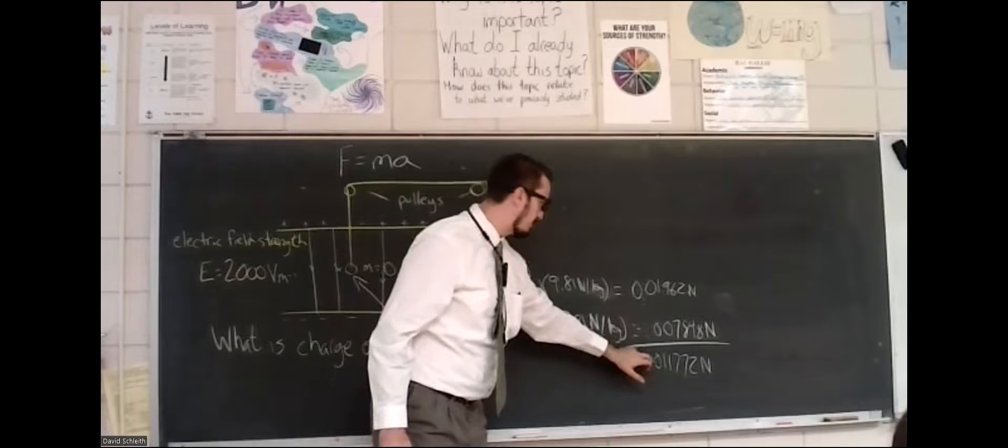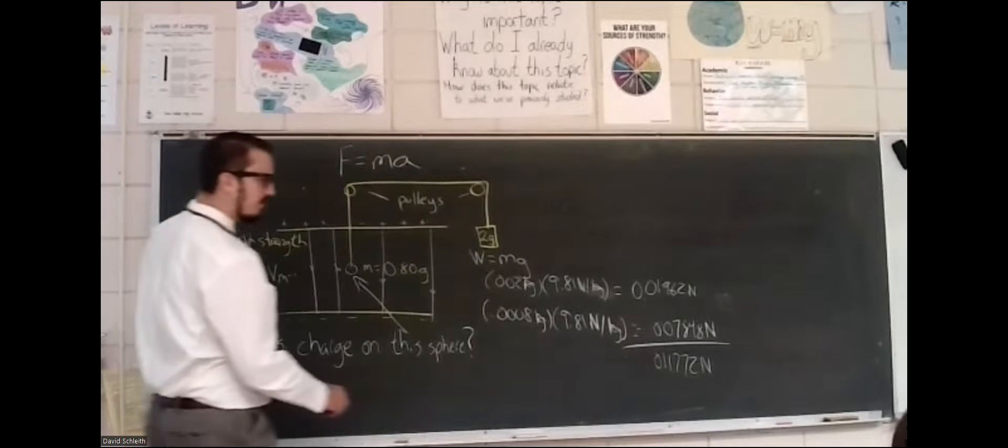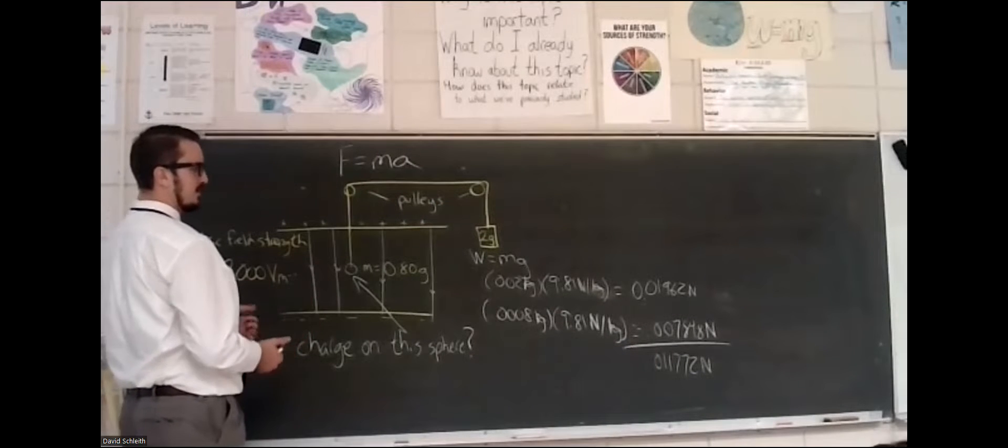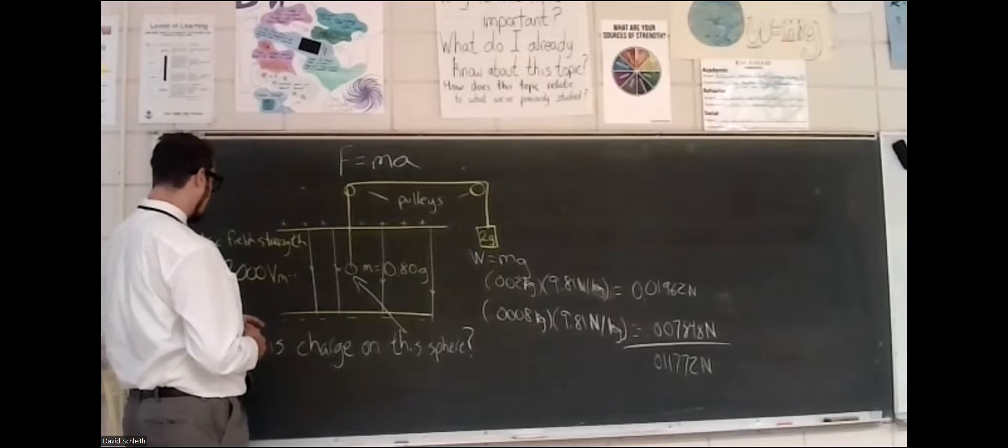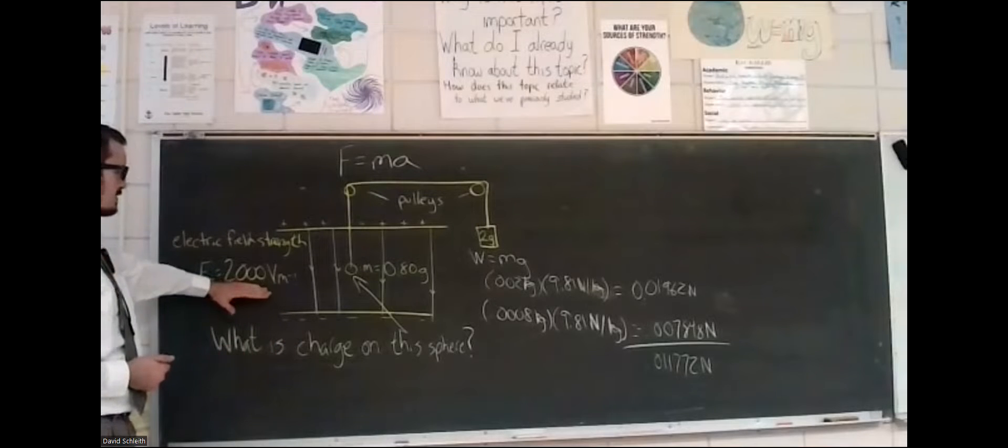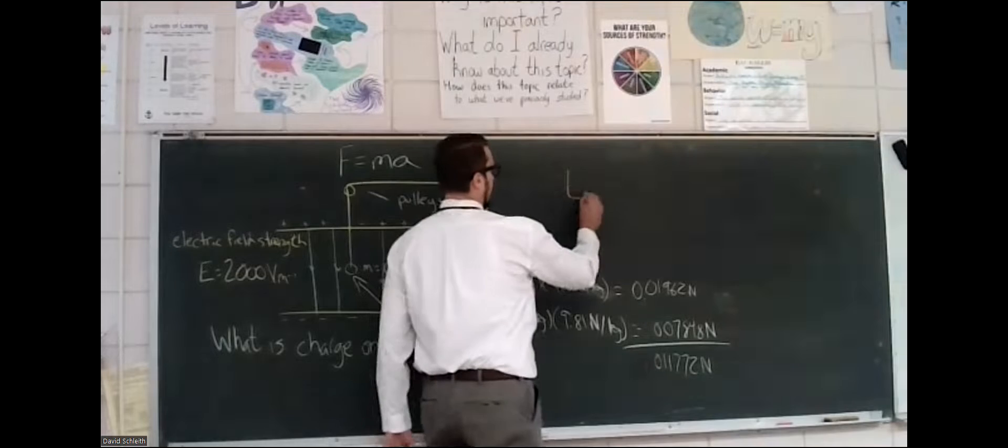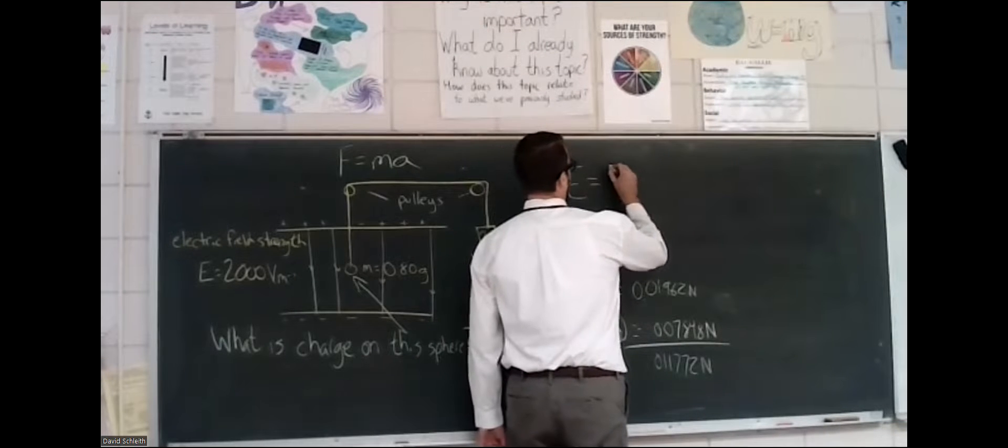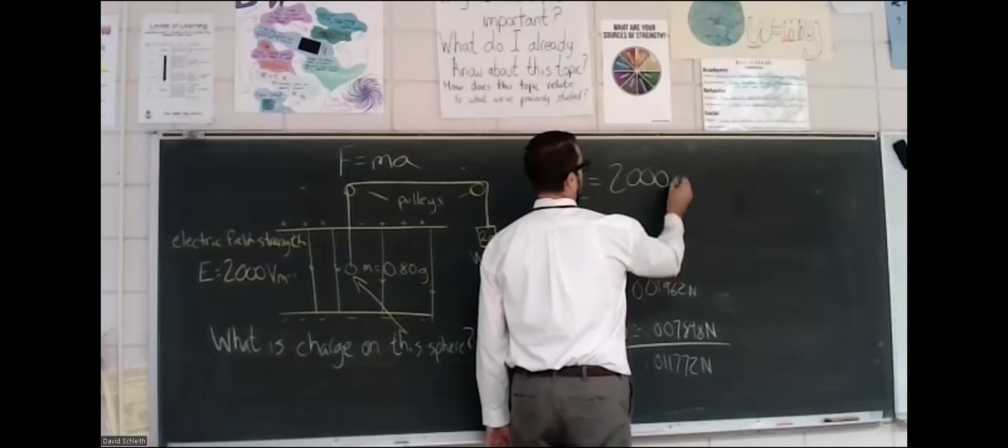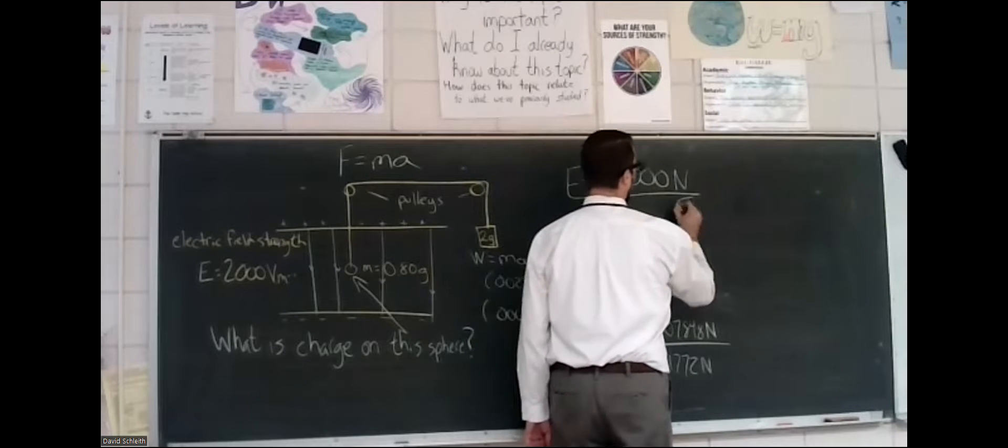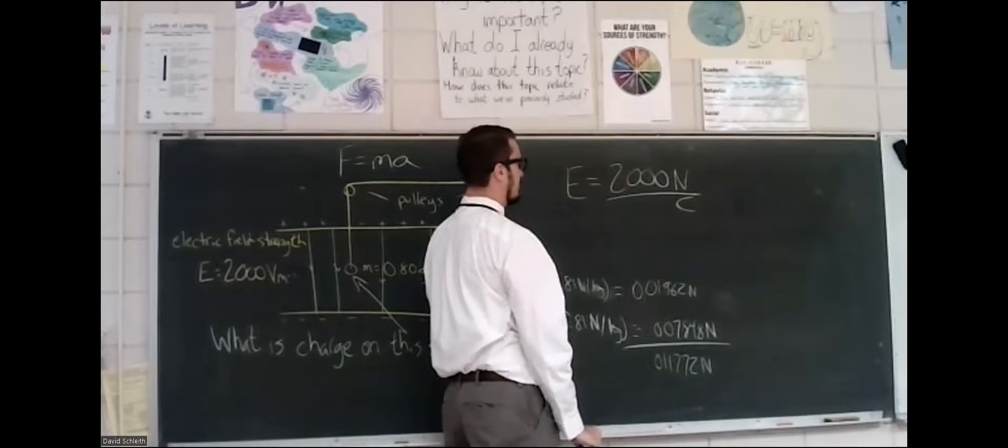Because we can see that the forces are not balanced in terms of just the weight forces, there must be that electric force equal to that. So we know the electric field strength here is 2,000 volts per meter. That is to say, the electric field strength is 2,000 newtons per coulomb. A newton per coulomb is the same thing as a volt per meter.